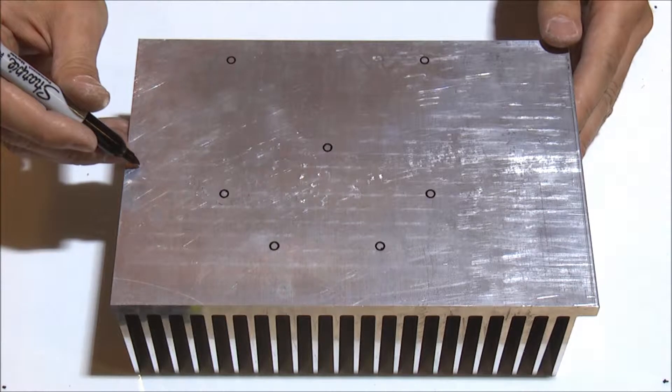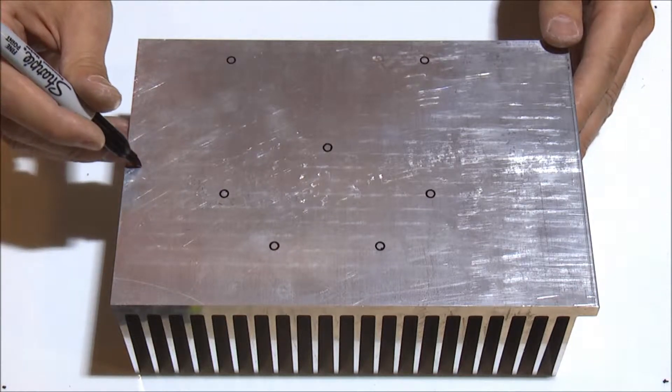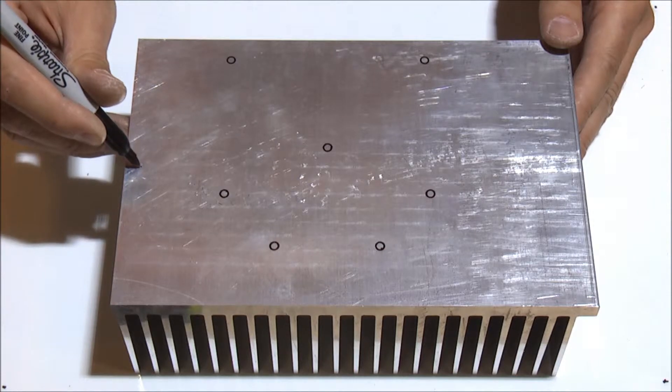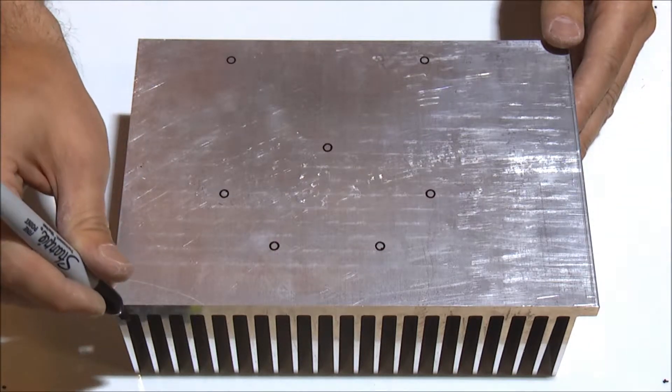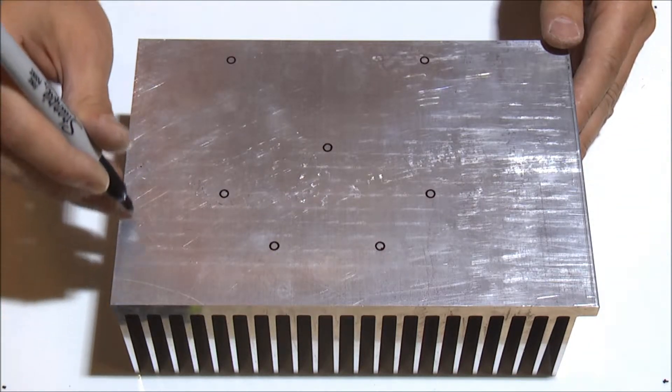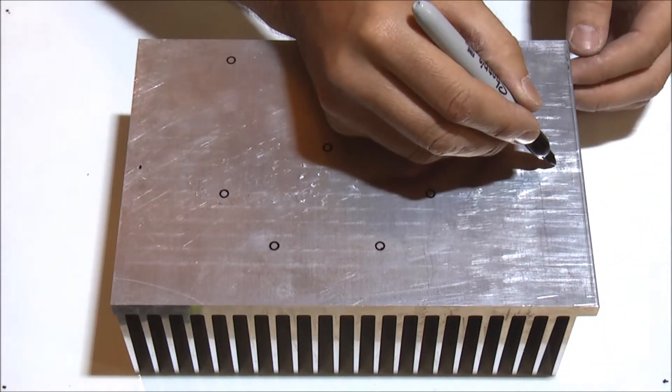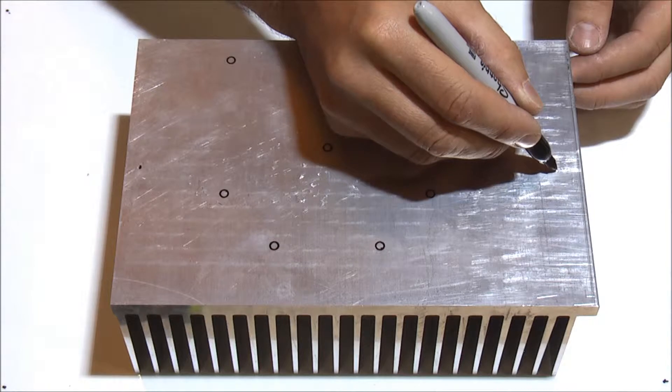Roughly in the center here, put a mark. It's in between the two fins. As you can see here, in the middle of the fins, put a mark, this one hole. Again, in the center, roughly in between the fins, put another one.